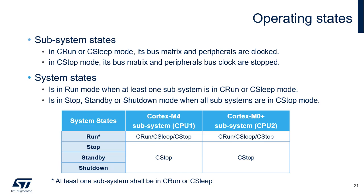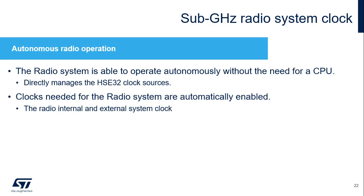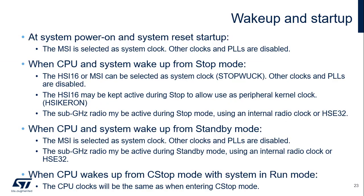The following table gives a simplified view of the system states versus subsystem states. When a subsystem is in C-run or C-sleep mode, its bus matrix is clocked. When a subsystem is in C-stop mode, its bus matrix is stopped. The system only enters stop, standby, or shutdown mode when all subsystems are in C-stop mode. For more details on system states, please refer to the power controller or PWR training slides. The radio system can operate autonomously and is able to wake up the CPU system from stop and standby modes. The clock for the radio system is managed by the radio stack and, in some operating modes, by the radio system itself. The HSE-32 clock is used for radio TX and RX communication.